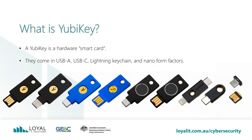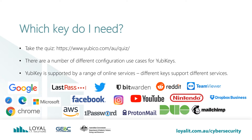A YubiKey is a hardware smart card. They come in USB-A, USB-C, Lightning keychain, and Nano form factors. A number of these keys support biometrics and near-field communication, or NFC, like the technology you use for tap and pay on your phone or credit card. You can take the quiz at the website on the screen to determine which key you need. The universal key currently is the 5 Series, which retails for about $75 Australian dollars. There are a number of different configuration use cases for YubiKeys. Different keys support different services, so it's important to work out which key you need before buying.